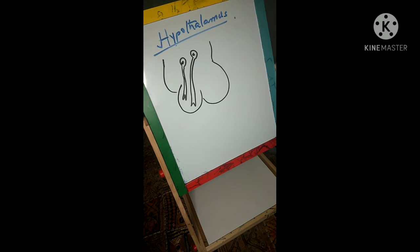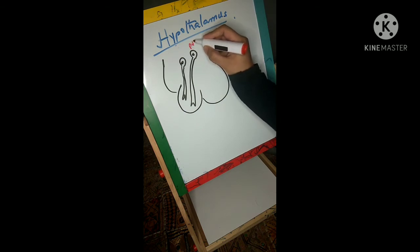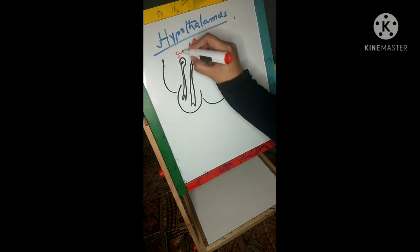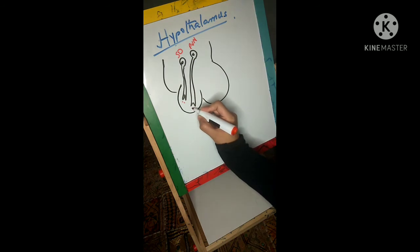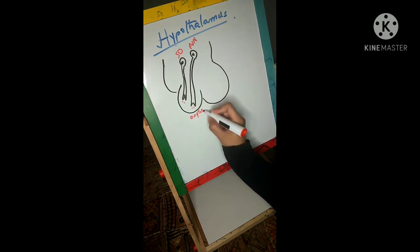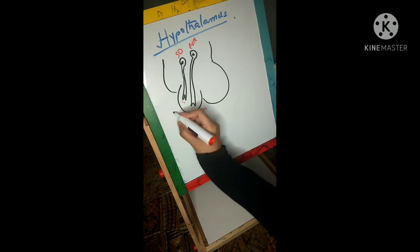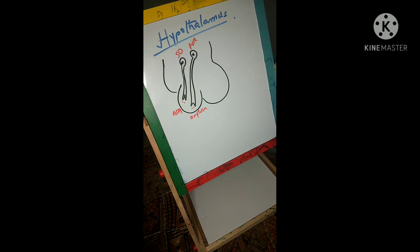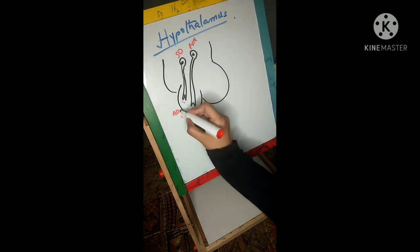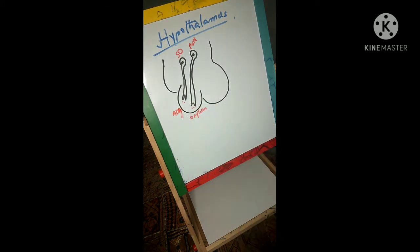These two neurons represent the supraoptic nucleus and the paraventricular nucleus, marked as PVN. The supraoptic nucleus results in the release of ADH, that is antidiuretic hormone, while the paraventricular nucleus results in the release of oxytocin.